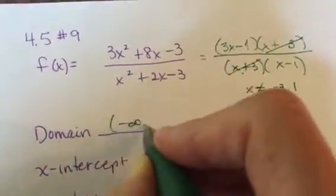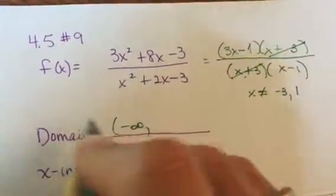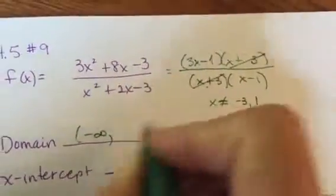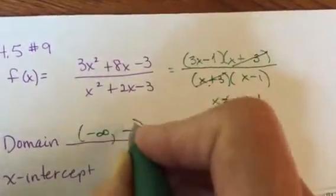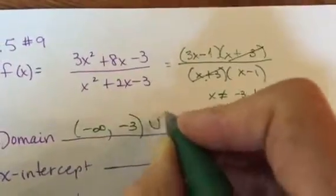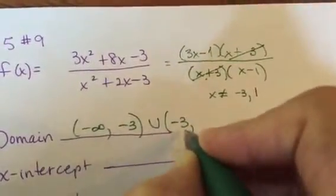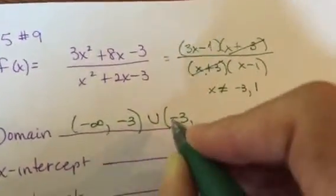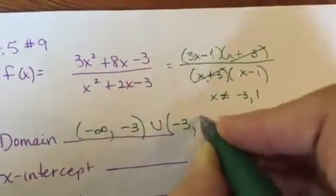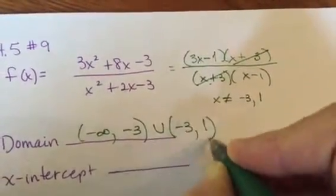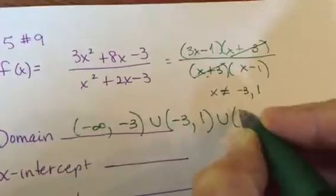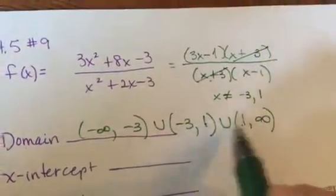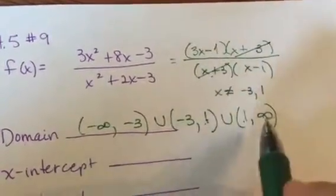So when I write that in interval notation, I can include everything, everything negative, until I get to negative 3. And then I put a parenthesis there, because I can't include negative 3, but everything's good right after negative 3. Notice these are the same number, and life is good until you get to 1. Can't use 1. And then everything's good after 1. And again, notice these are the same right there. So that's your domain.